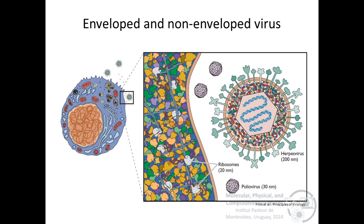You can see the nucleocapsid, the genome inside, and here the envelope. And in this figure we can see a non-enveloped virus, poliovirus, which is much smaller than herpes virus, and its size is more similar to that of a ribosome.